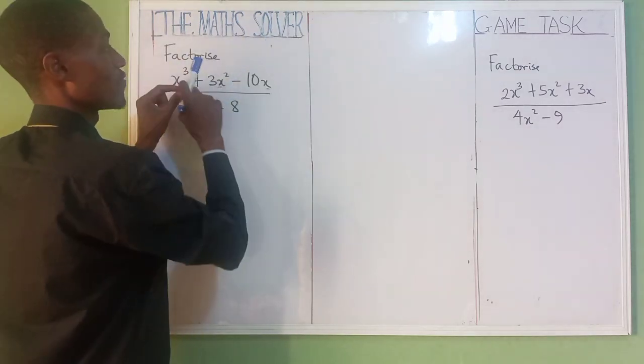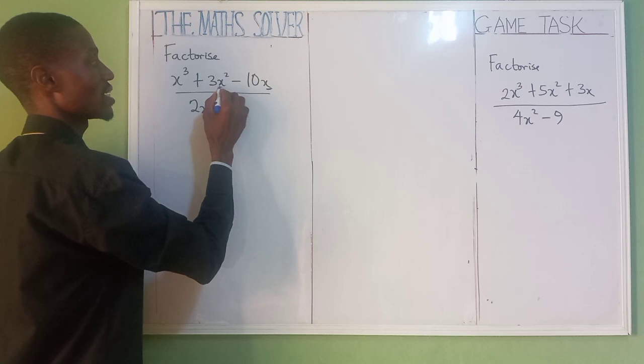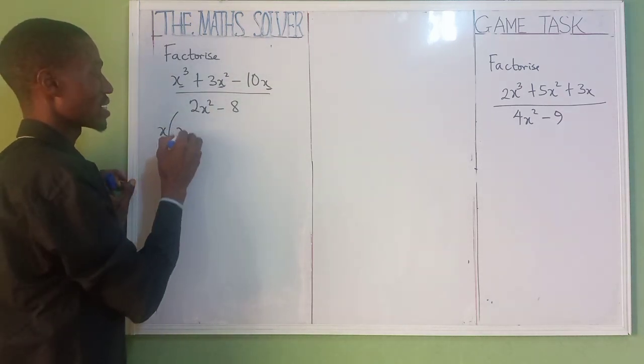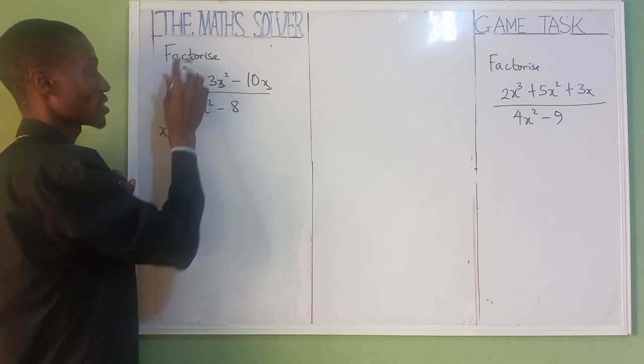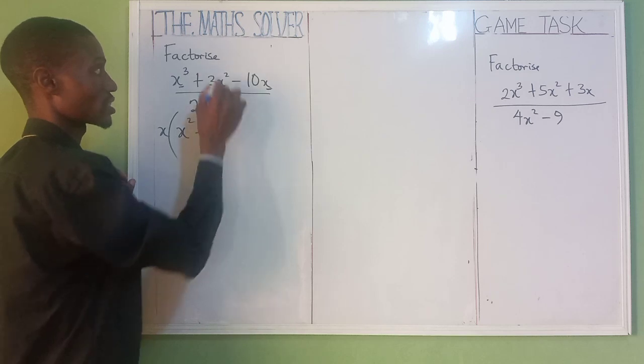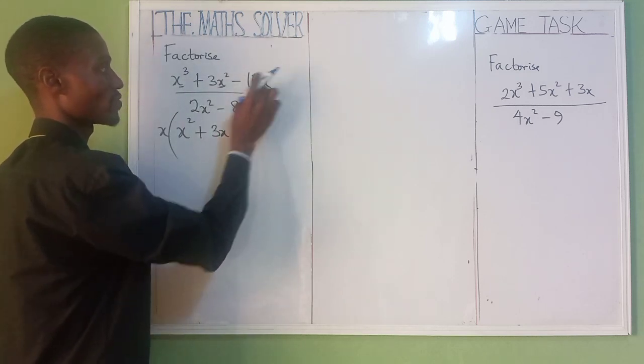These are the numerator. First, let's check what is common to all three terms. As you can see, x is here, x is here, x is here. Bring it out first. x is common to all three. So what it means is x(x² + 3x - 10). Because this is 3, we have moved one out. This is 2, we have moved one out to get minus 10.